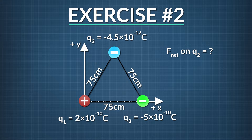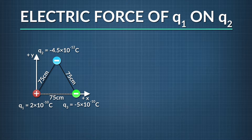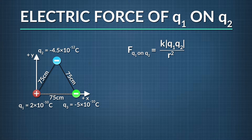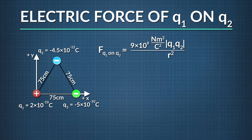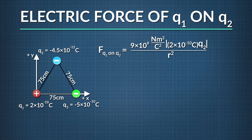Let's start with q1. We can find the magnitude of the electric force q1 exerts on q2 using Coulomb's Law. The force equals k, 9 times 10 to the ninth newton meters squared per coulomb squared, times the absolute value of q1, 2 times 10 to the negative tenth coulombs, times q2, negative 4.5 times 10 to the negative twelfth coulombs.